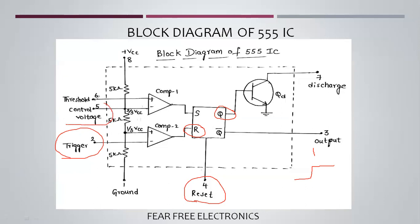The fifth pin is the Control Voltage. The control voltage is connected to the minus terminal of comparator 1. By default, this point is at 2/3 VCC from the potential divider. If we need a separate or adjustable threshold, we can apply an external voltage to this pin. If no external voltage is applied, a 0.01 microfarad capacitor is connected between pin 5 and ground to filter noise.